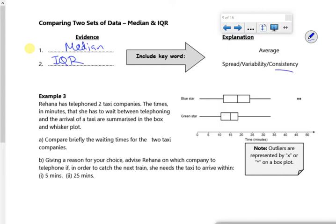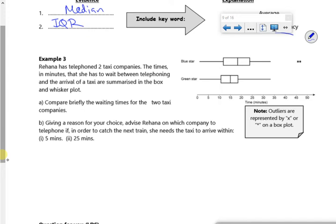So we've got Rohana, it tells you from two taxi companies, times in minutes that she has to wait, and the two different companies are shown in the box plot. Compare briefly the waiting times.